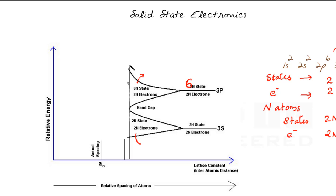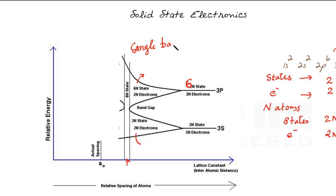As we decrease the interatomic distance further, the atoms come more and more closer. At a particular interatomic distance, the bands essentially merge into a single continuous band, where we have 8n states and 4n electrons.